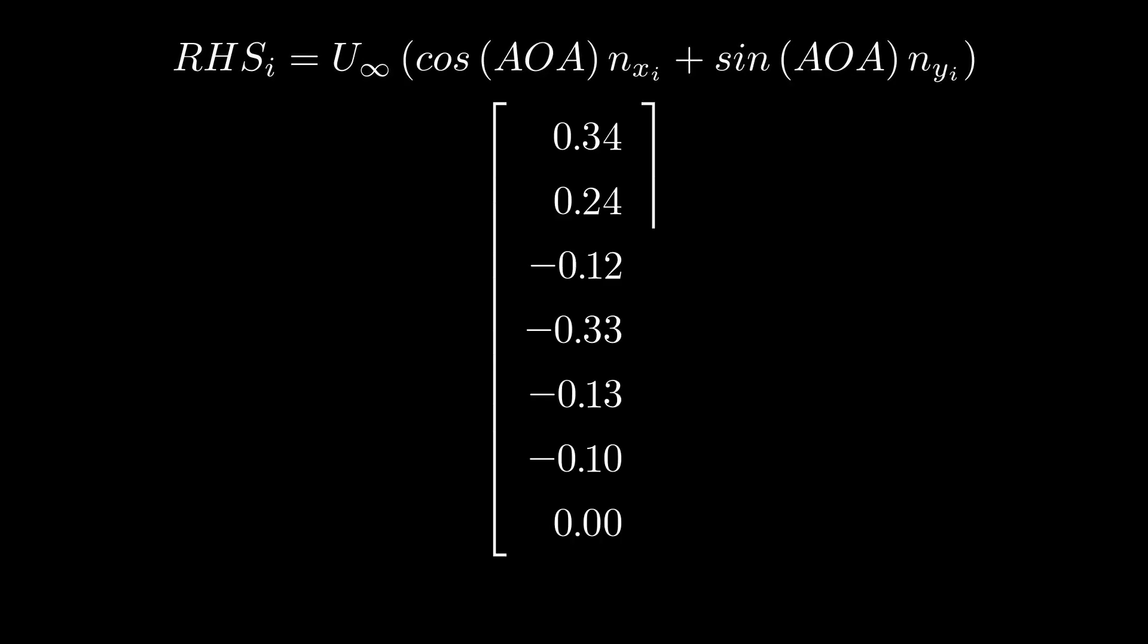Next we will find our right hand side which is much simpler. We will take the X component of the free stream times the X component of the co-location normal vector then do the same for the Y component and then add them together.